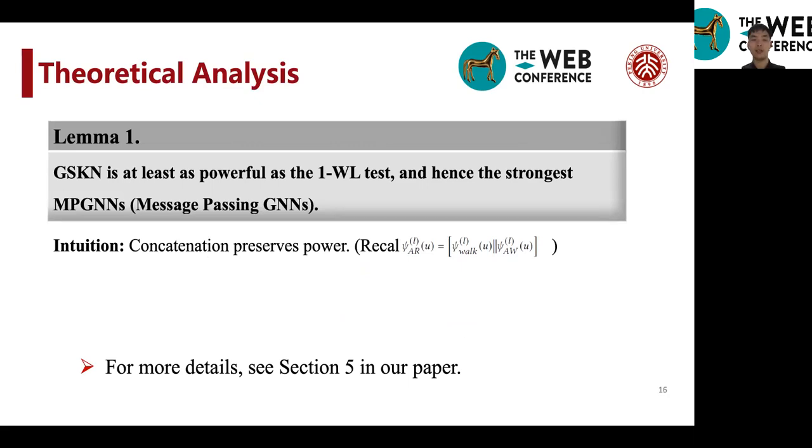So first, we show that GSKN is at least as powerful as the 1-WL test, and hence the strongest message-passing graph neural networks. And the intuition about the lemma is that concatenation of two vectors preserves the expressive power.